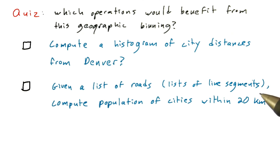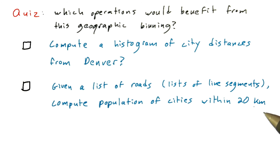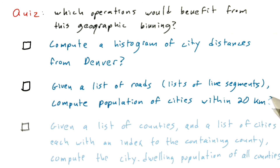What if you had a list of roads, each represented as a list of line segments, and you wanted to compute the population of cities within 20 kilometers of that road? Would it help to use the geographic binning we described?